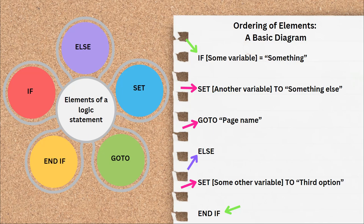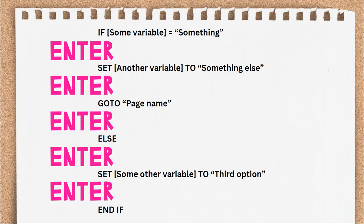So quick recap: start with an if, then add set, go to, and else statements in the middle, and always end with an end if. One more important pointer: each of those five commands needs to be on their own line. They don't play well together, so make sure to put a hard return — that's the enter key for most users — between each element.